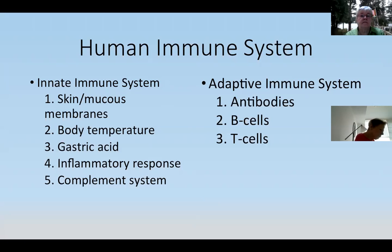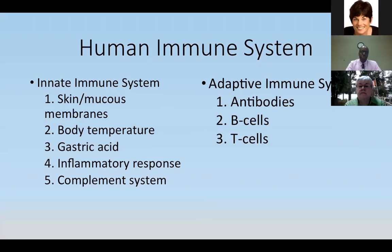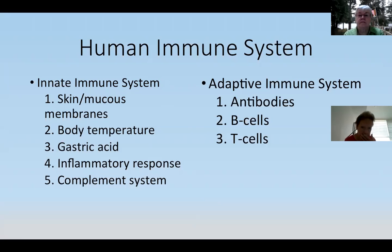The adaptive immune system is the antibody side of things. This is where our body produces antibodies to fight against particular organisms. Within the antibody system, there are also two other cell types: B cells and T cells. B cells are the cells that produce the antibodies. T cells are more of the modulating and surveillance cells in our bodies that help with development of the adaptive immune system.